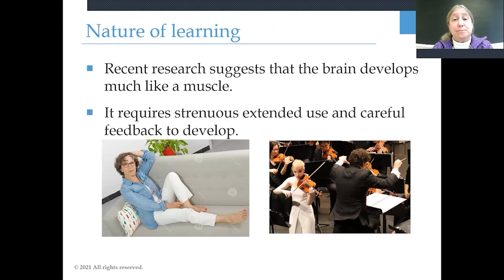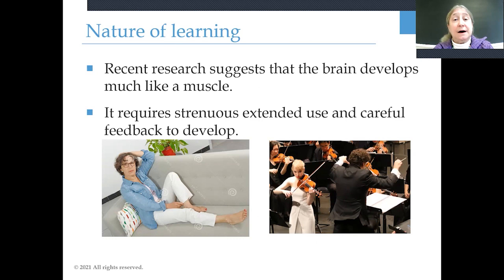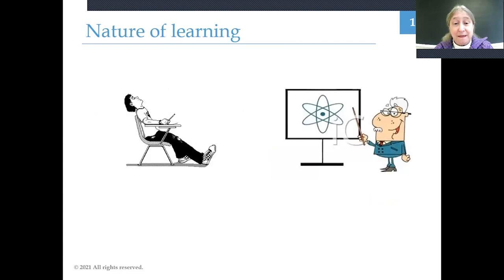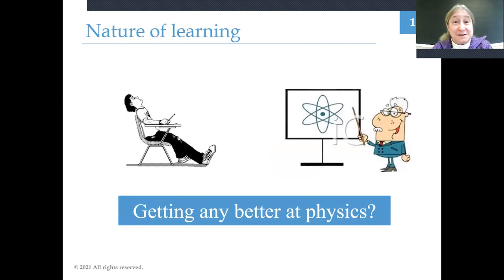The research I'm alluding to has concluded that brain development is very much like developing muscles — it requires exercise, practice, and careful feedback. If you don't engage in those activities, your brain doesn't develop and you don't learn. I'm a musician, and suppose I want to improve my musical skills. I could sit on my couch and watch videos of people playing the violin, but I would not get any better by doing that. The same is true of physics: if you simply sit passively and listen to somebody tell you about physics, you don't get any better at doing physics. You have to practice and exercise your brain.